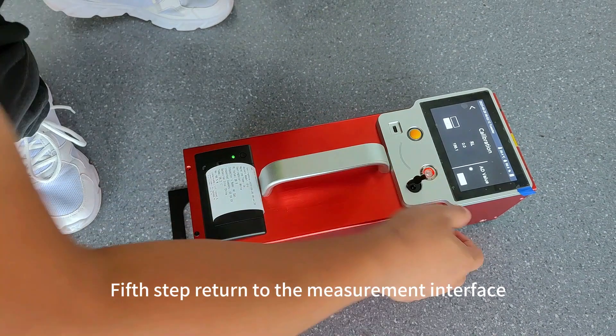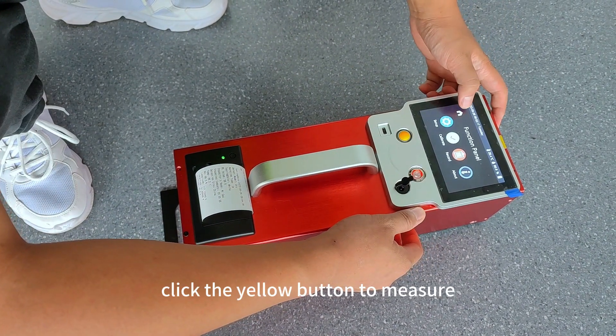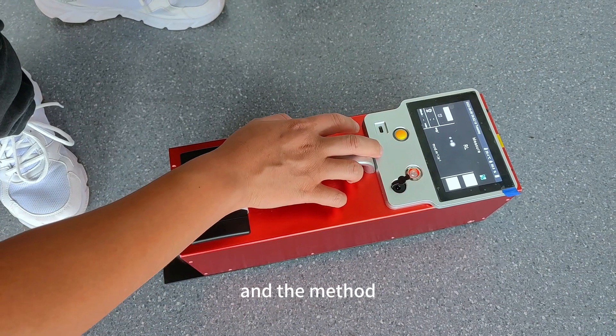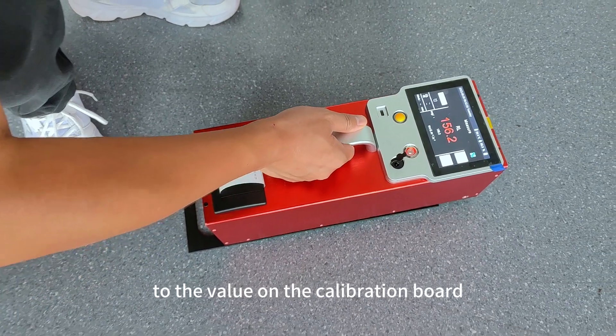Fifth step, return to the measurement interface, click the yellow button to measure, and the measured data will be displayed as close to the value on the calibration board.